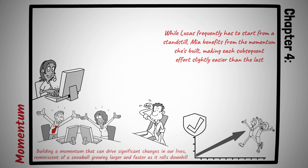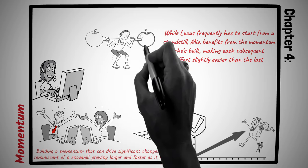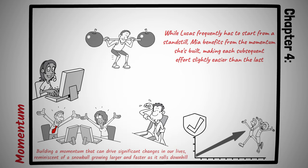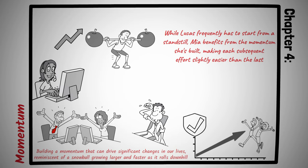Relating this to our personal endeavors, think about fitness. Starting a fitness regimen can be challenging. The initial days of working out might feel tough, with sore muscles and a tempting desire to quit. However, if one persists through this phase, gradually, the exercises become more manageable, the body craves the endorphin rush, and going to the gym or taking that morning run becomes a part of the daily routine. What once felt like pushing a boulder uphill, now feels like riding a bicycle downhill. The momentum built through consistency turns resistance into assistance.